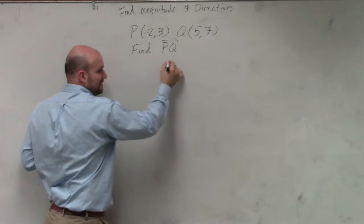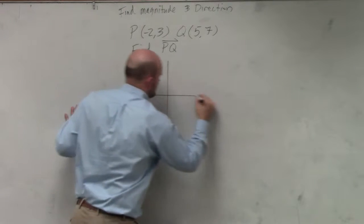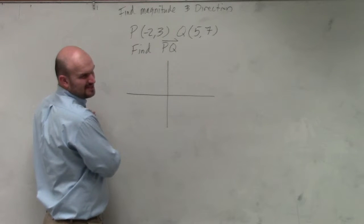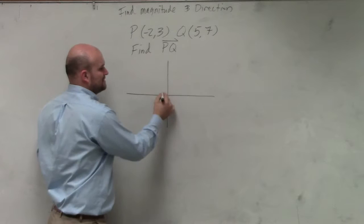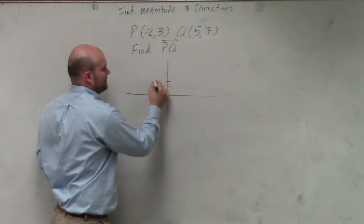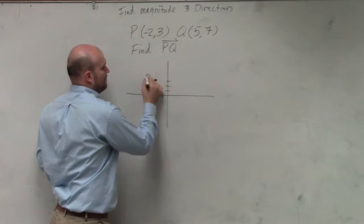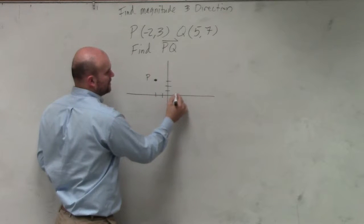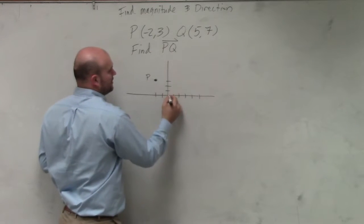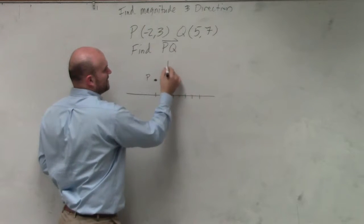So what I recommend doing here is just plotting them so you guys can see what they look like as far as coordinate points. So this is negative 2, 1, 2, 3, point P. And then Q is 1, 2, 3, 4, 5, 1, 2, 3, 4, 5, 6, 7.